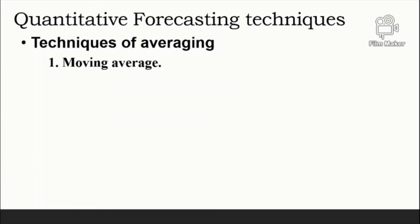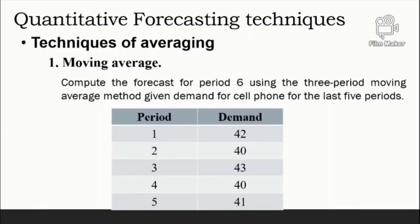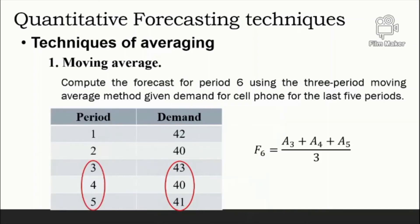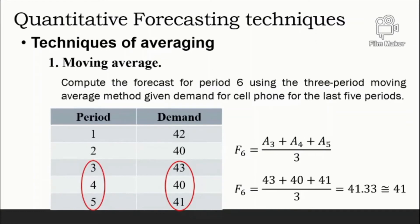For example, compute the forecast for period six using the three-period moving average method, given demand for a cell phone for the last five periods. The last three periods are period numbers three, four, and five, with corresponding demands of 43, 40, and 41. The average of these three numbers is the forecast for period six.